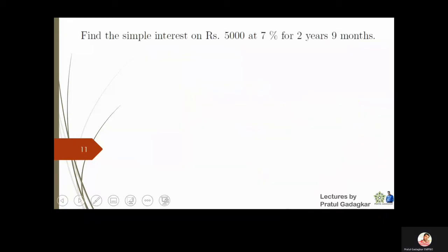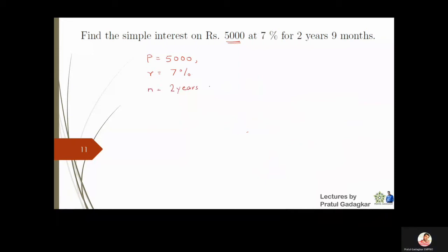The next question: find the simple interest on rupees 5000 at 7 percent for two years and nine months. Two years means 24 months, and adding nine months gives 33 months total.